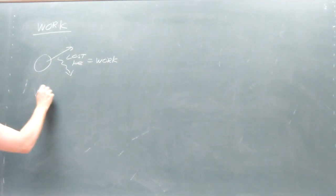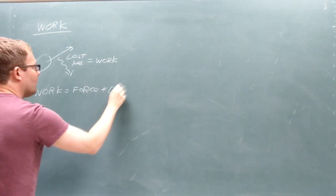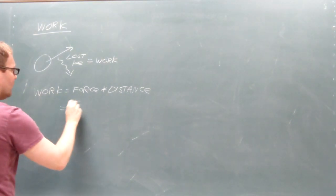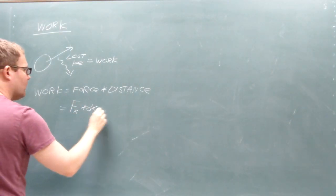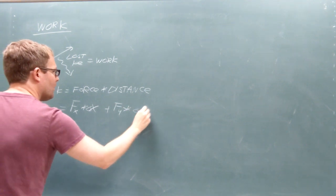We can calculate work as the product of the force of air resistance with the distance that the projectile travels in each frame of the animation. We just match the x component of the force with the x component of the distance and match the y component of the force with the y component of the distance.